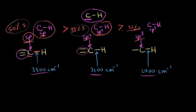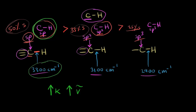This order of bond strength explains the wave numbers. From the previous video, bond strength affects the force constant k. As you increase bond strength, you increase k, and increasing k increases the frequency or wave number. Since the sp C-H bond is the strongest, it has the highest wave number, so its signal appears furthest to the left on the IR spectrum.